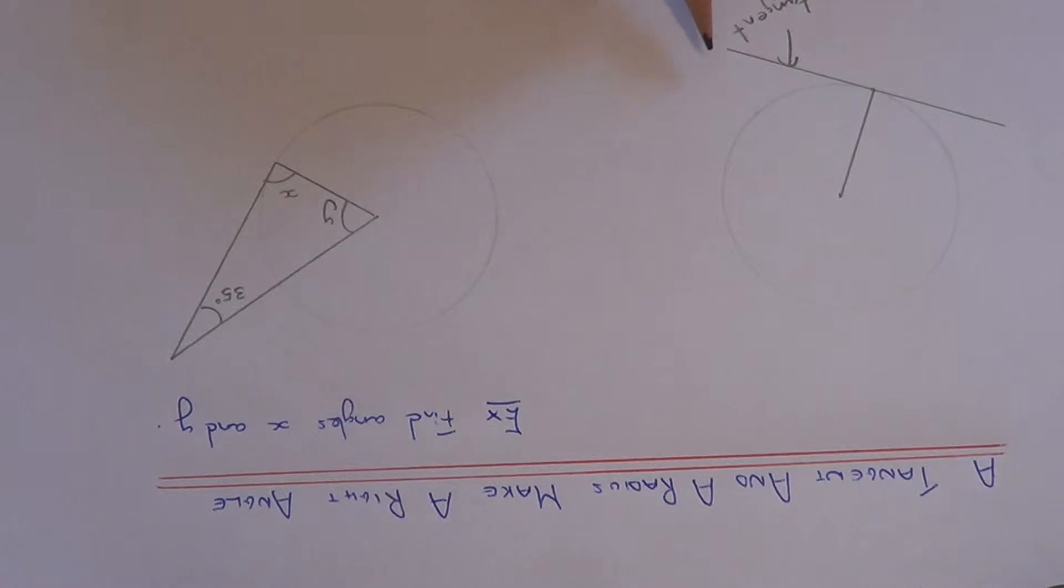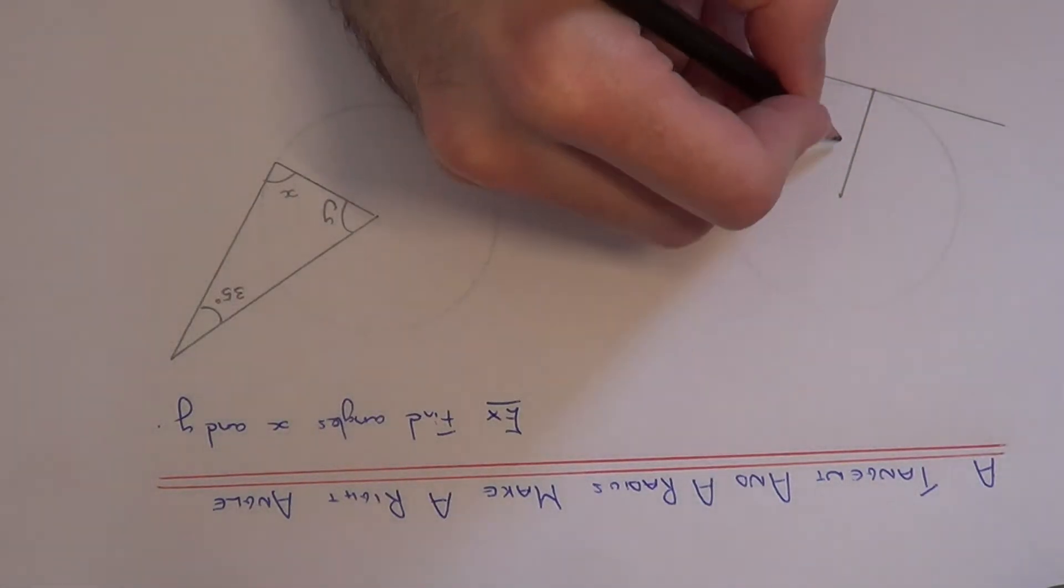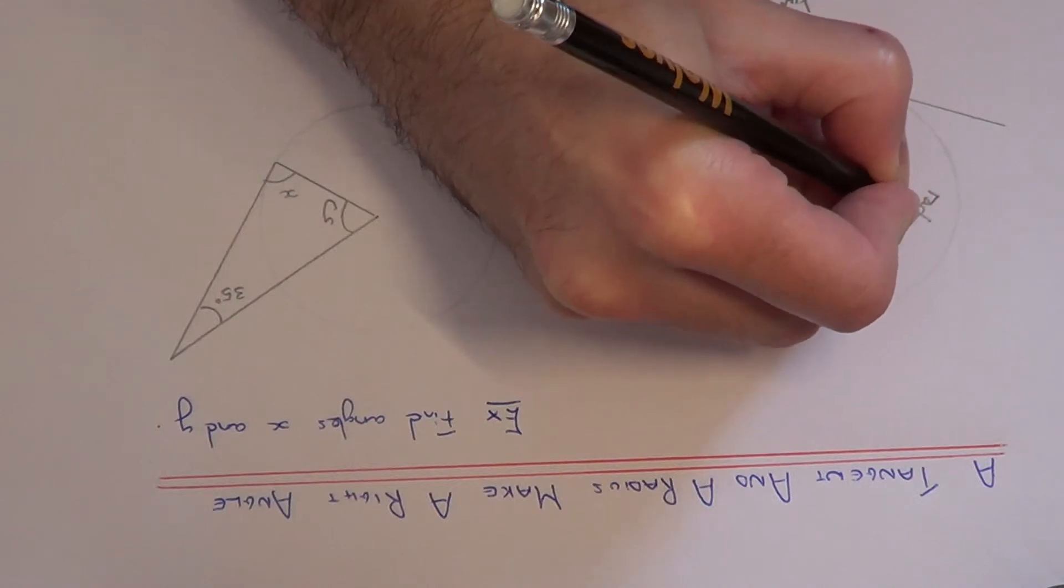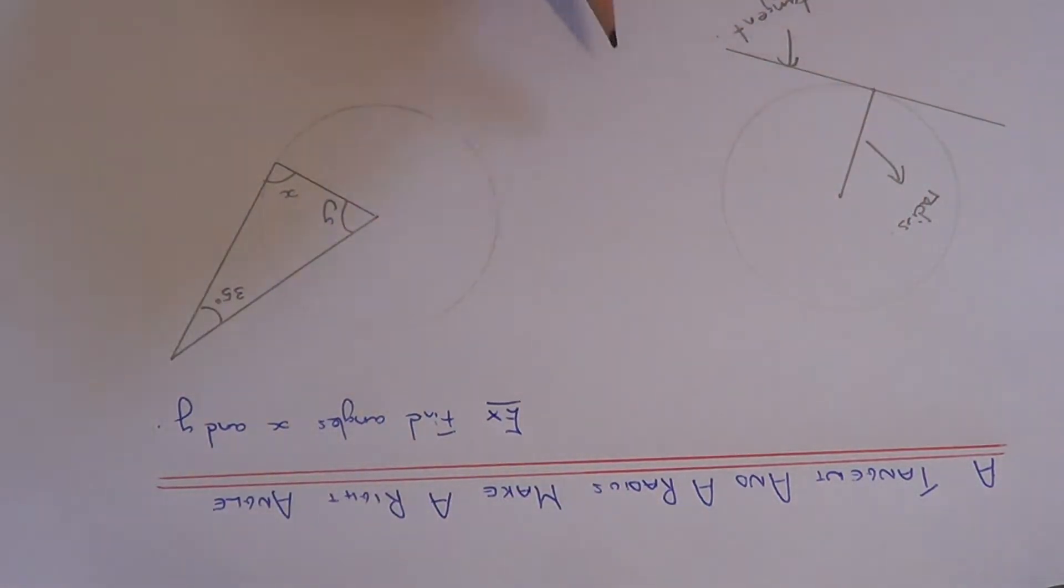And where the tangent line meets the radius, the radius is the line going from the center to the circumference of the circle. Then the angle which is made between the radius and the tangent is a right angle.